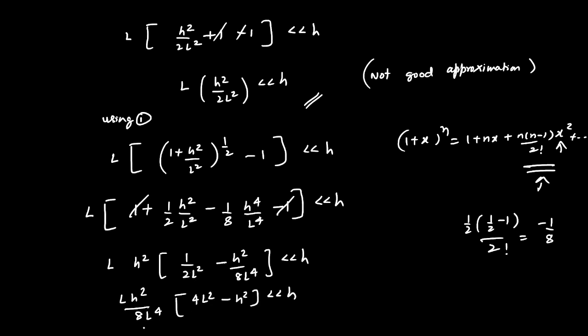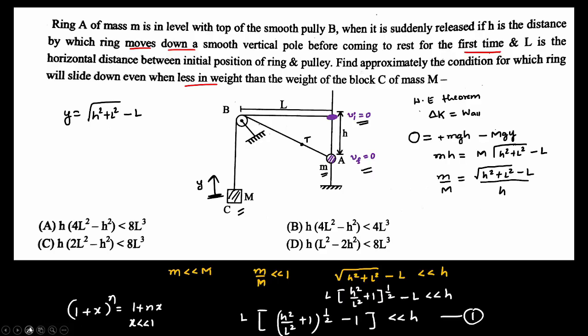So one of the h term getting cancelled out, one of the L term it goes like cube, so we have h times four L squared minus h squared, that should be less than eight L cube. So this is the required condition and that's our option A.